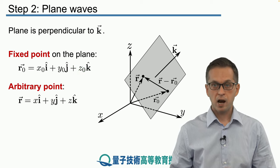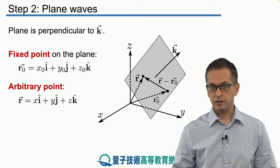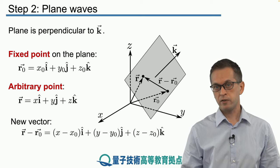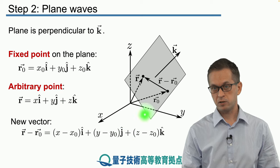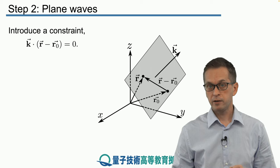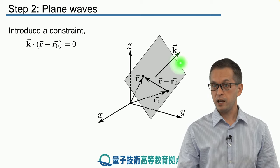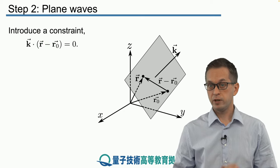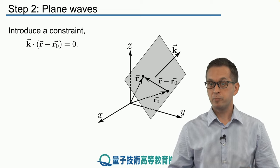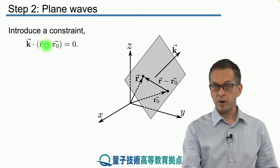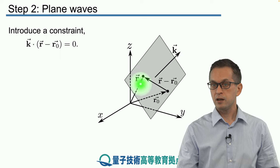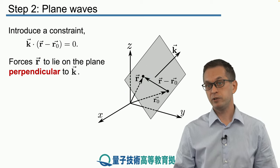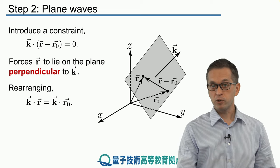Then we take an arbitrary point r, which does not have to lie in the plane, with coordinates x, y, and z. We form the difference r − r0. The key step is to require that the inner product between vector k, which is perpendicular to the plane, and the vector r − r0, is zero. When an inner product is zero, the two vectors are perpendicular — meaning r − r0 is perpendicular to k, so the point r lies in the plane perpendicular to k.